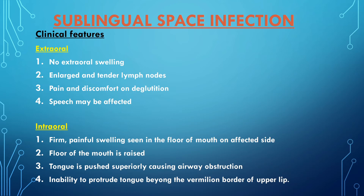The intraoral findings include firm painful swelling seen in the floor of the mouth on the affected side. The floor of the mouth is raised and the tongue is pushed superiorly, causing airway obstruction. There is inability to protrude the tongue beyond the vermilion border of the upper lip.